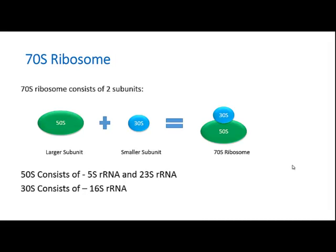The 70S ribosome consists of two subunits: a larger subunit and a smaller subunit. The larger subunit is called the 50S subunit and the smaller subunit is called the 30S subunit. Together they form the 70S ribosome. The 'S' denotes the Svedberg unit, which is the sedimentation coefficient used to characterize particles based on their sedimentation.